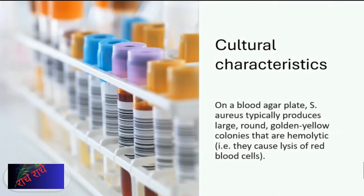Staphylococcus aureus is a gram-positive bacteria recognizable by its golden-yellow colonies grown on a blood agar plate, which are also hemolytic, or cause lysis of red blood cells. When testing for the presence of this bacteria, this characteristic is an important factor to consider.